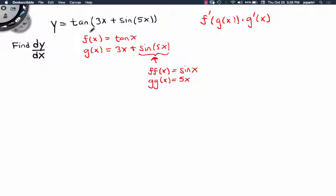What's the derivative of tangent? It's secant squared. So it's not just secant squared of x though. It's secant squared of the function within, which is 3x plus sine of 5x, times the derivative of g.